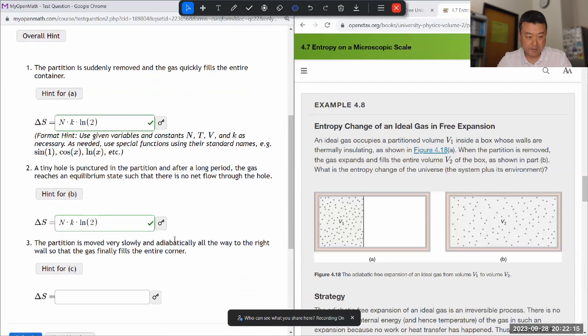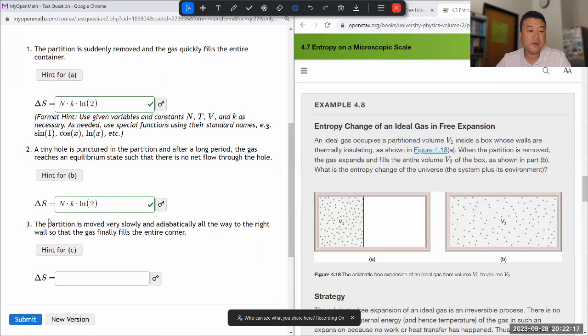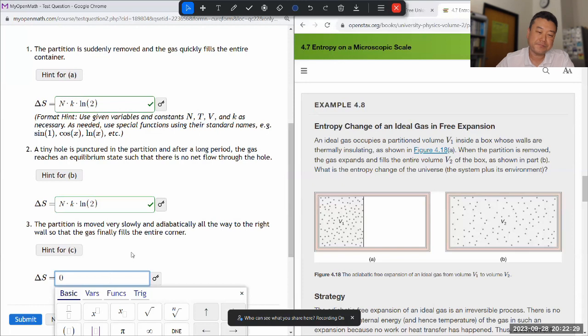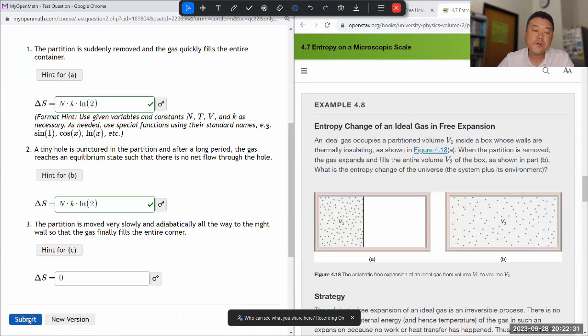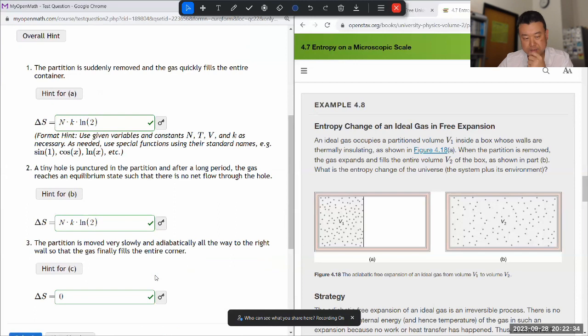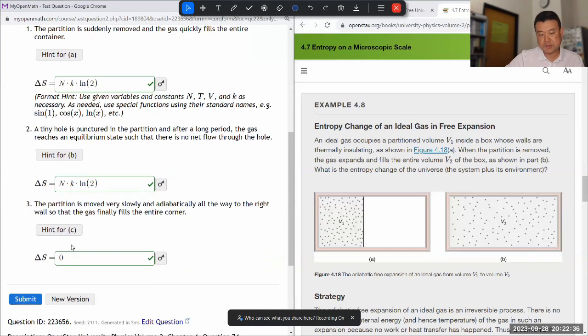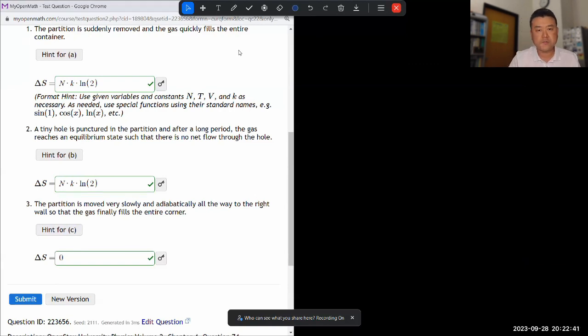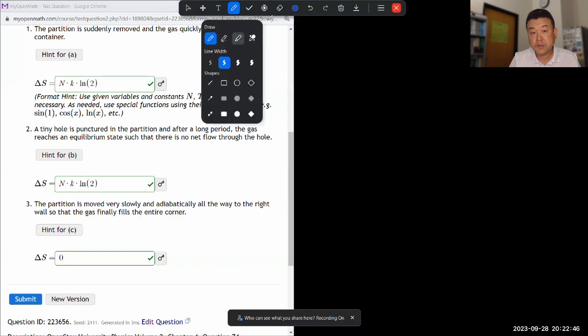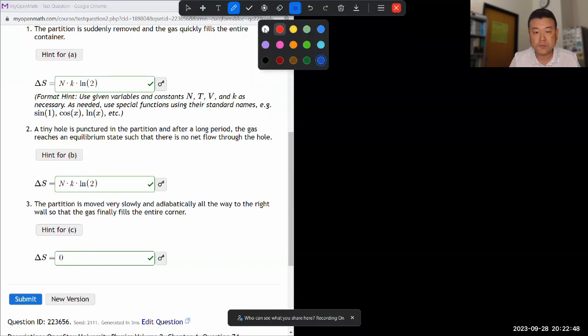Finally, it says the partition is moved very slowly and adiabatically all the way to the right, so that the gas finally fills the entire corner, then it should be zero. So, what that means is if this, so this third process, let me just diagram it so that there's an understanding of how those three processes are different. Well, at least one of them is different from the other two.